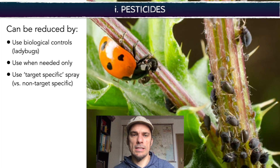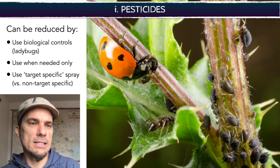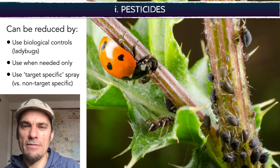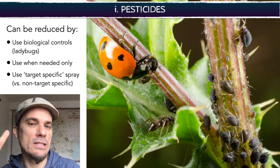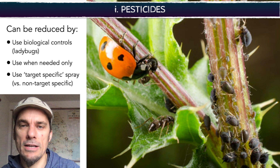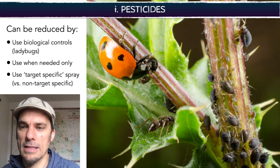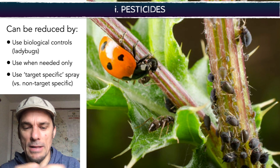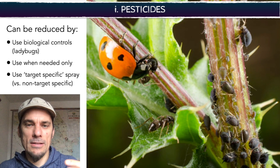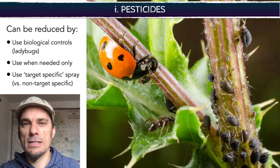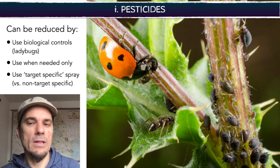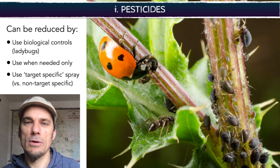Looking at pesticides first — we'll look at how these things can be reduced. We can really reduce pesticides by using things like ladybugs. You can actually buy ladybugs online. If you have aphids — I'm actually growing tomatoes right now and I have a lot of these little black things called aphids — a ladybug is a natural pest control. It'll kill all the aphids, gets fat and healthy, has more ladybugs, and your tomato plants are protected. No chemical was used.